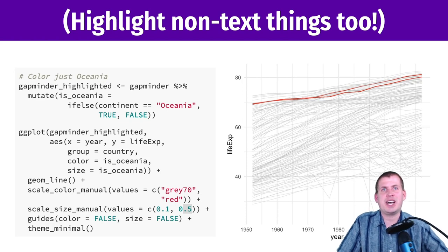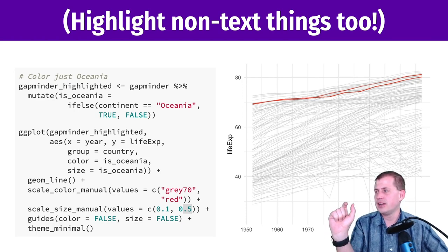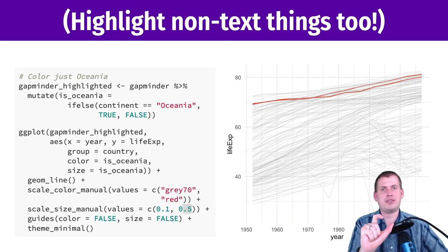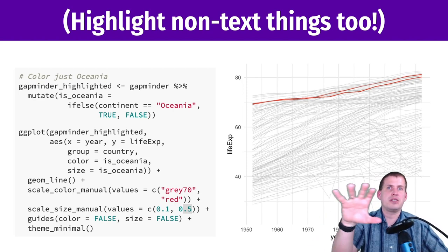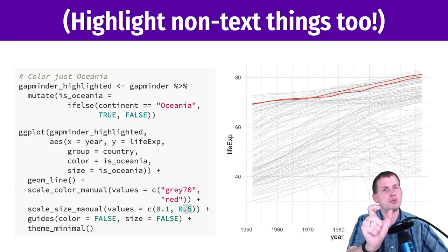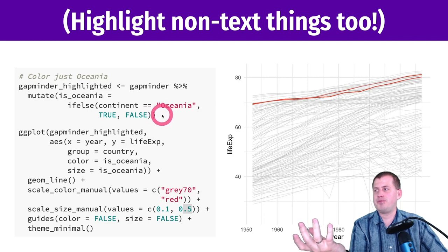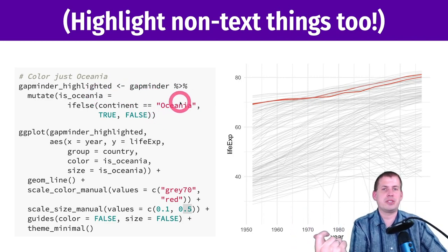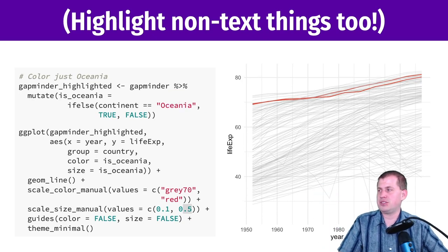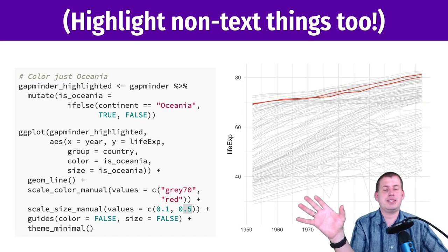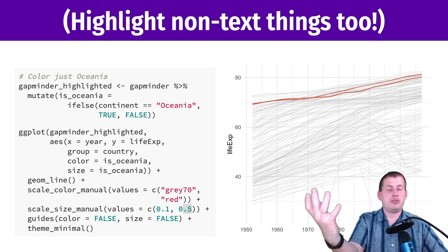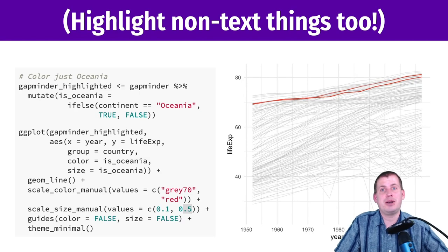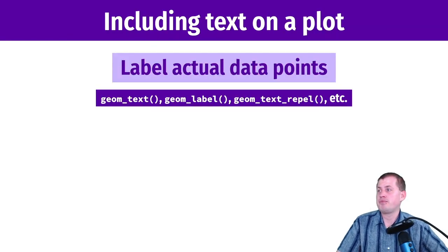There's a package called gg_highlight that makes this easier, though I haven't used it. With gg_highlight you use specific geoms to highlight things, but you still have to write a logical test — like 'highlight these lines if it's in Oceania' — and look up the documentation for the exact syntax. I find it easier to just make a smaller dataset or a new indicator variable using mutate, since I'm used to that approach. But if you want to try gg_highlight, go for it — it looks like a really cool package.